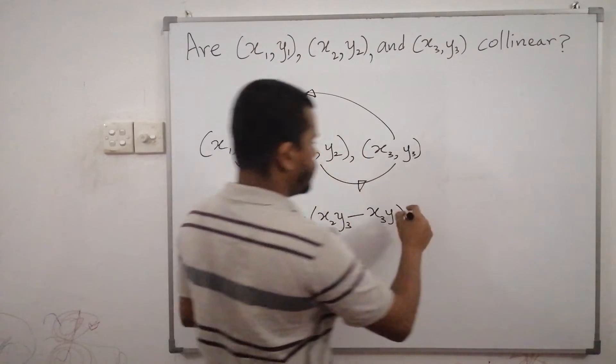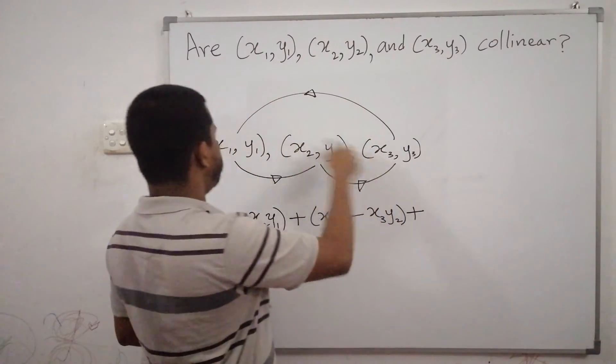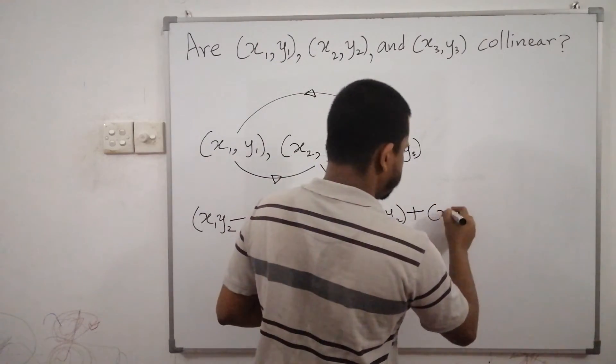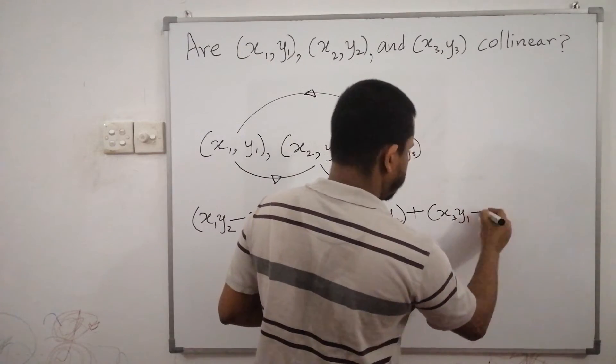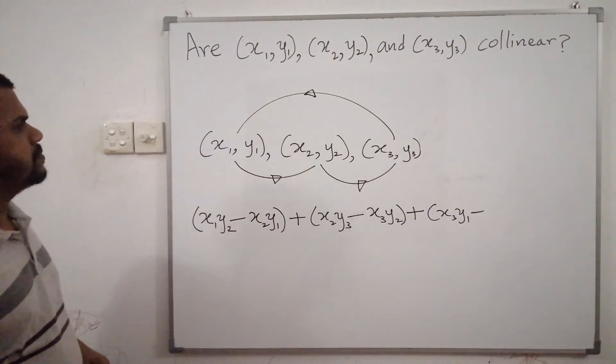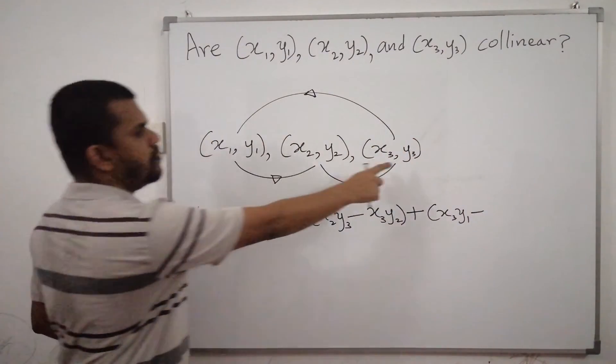Now consider this particular arrow, x3 by 1 minus x1 by 3.